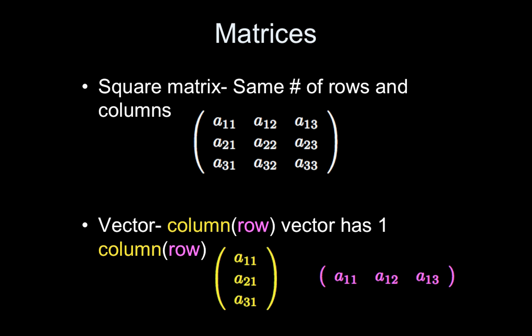There are some special matrices. Square matrices have the same number of rows and columns. And we'll see why that's special or why a square matrix can be special in a little bit.